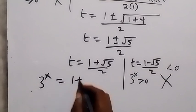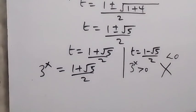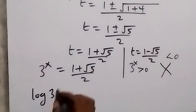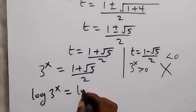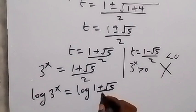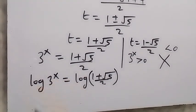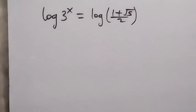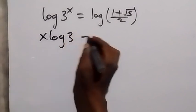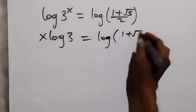So 3 raised to power x equals one plus root five over two. Now we take the log on both sides: log of 3 raised to power x equals log of the quantity one plus root five over two. Applying the power law of logarithm, x comes to the front and this becomes x times log three equals log of one plus root five over two.